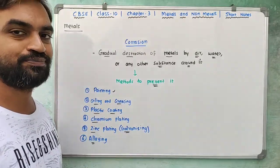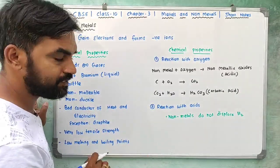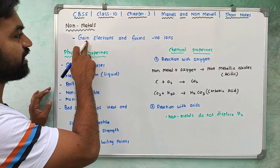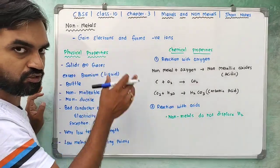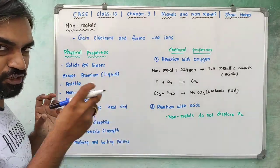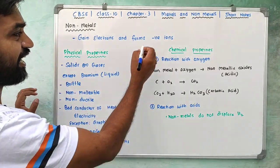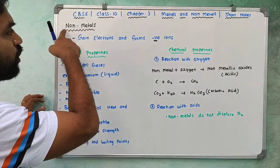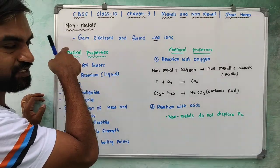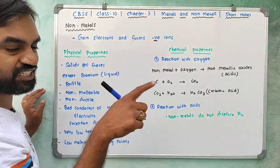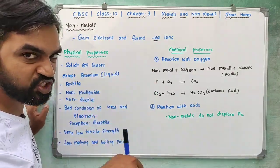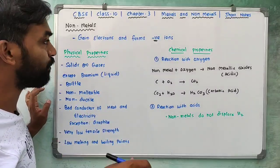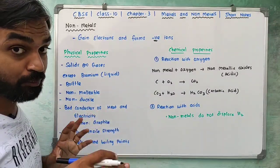Now, non-metals. Non-metals gain electrons and form negative ions — the first letter 'N' stands for negative ions. These are the key points to remember about non-metals. Let's look at the physical properties of non-metals.